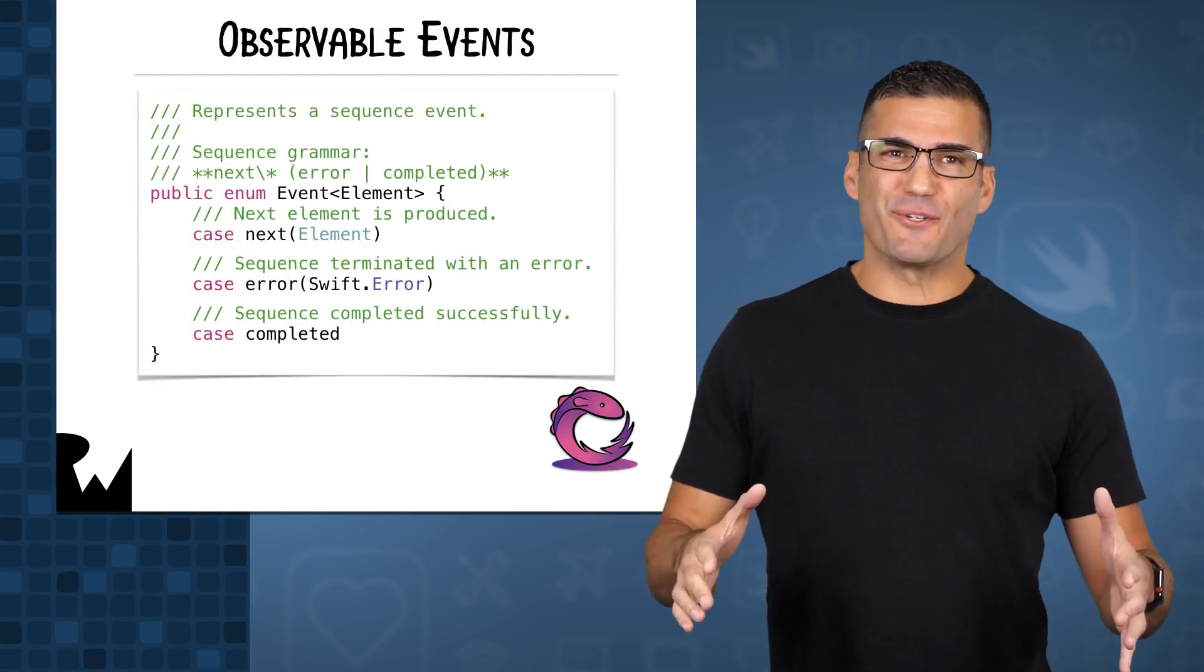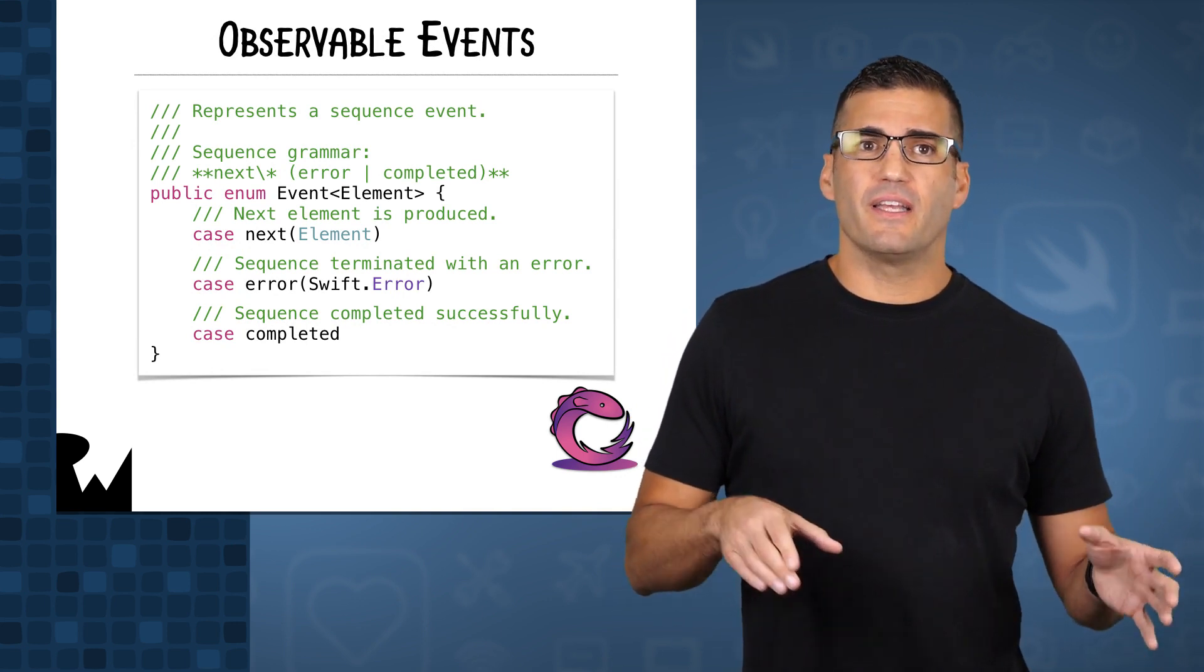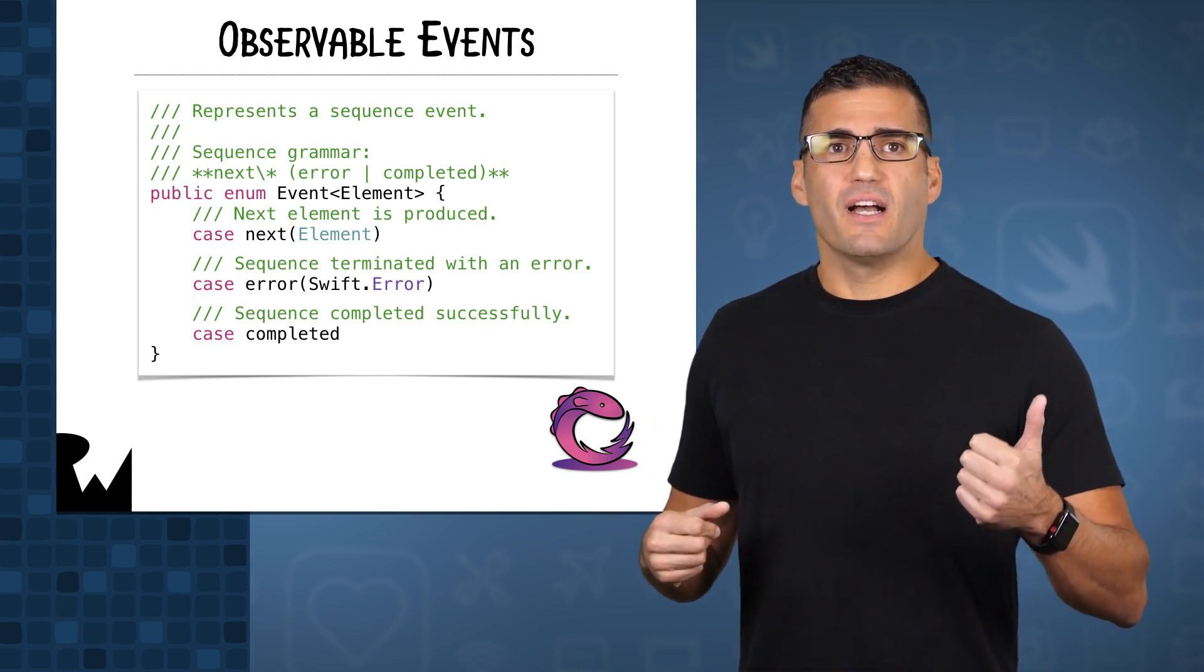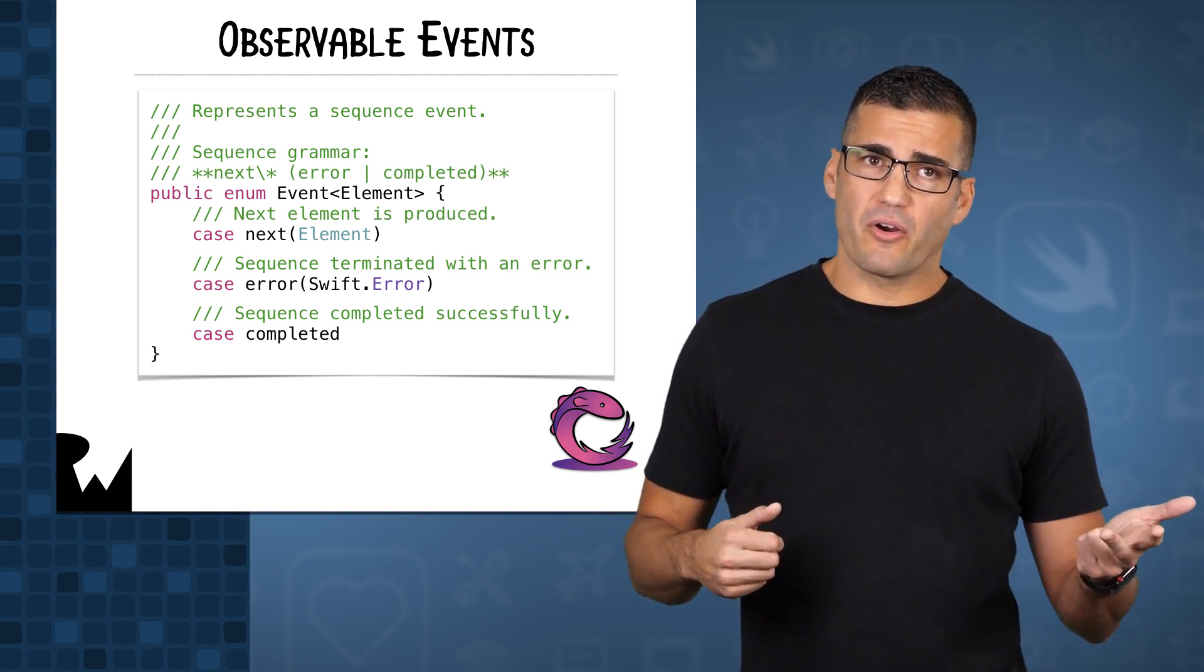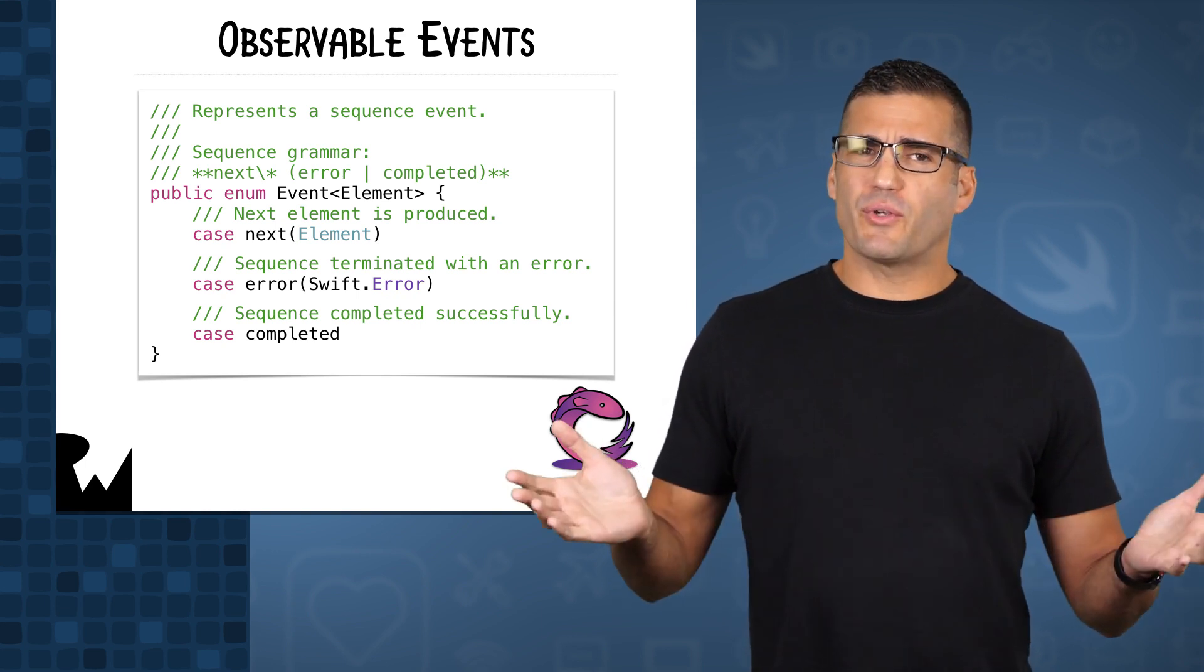This is the implementation of event of element. It's an enum with three cases. Next, associating an element. Error, associating an error. And completed, which doesn't associate any data.